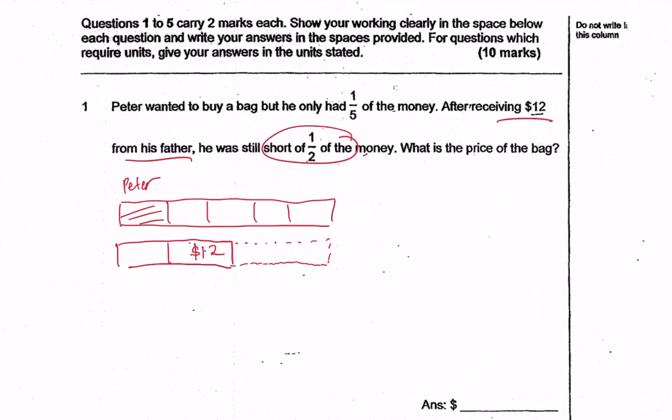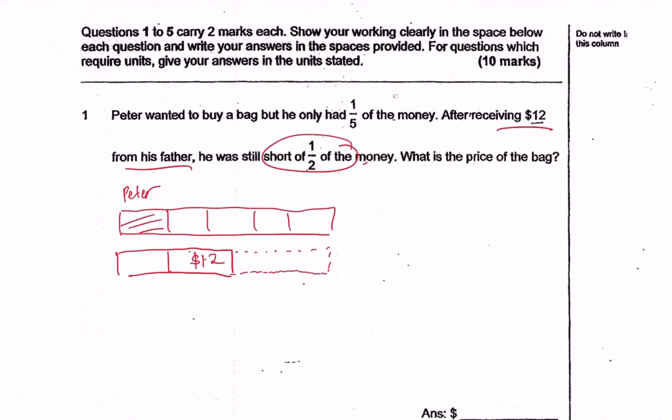So let's find out how we can find the full price of the bag. What we want to do is to make sure that the fractions have the same denominator. And the reason we want to do that is because it allows us to compare easily. Right now, one-fifth and half, it is very hard for us to compare side by side.